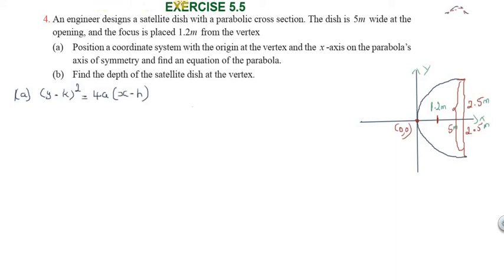Hi students, greetings from Success Education Academy. This is Exercise 5.5, question number 4. An engineer designs a satellite dish with a parabolic cross section that is 5 meters wide at the opening and the focus is placed 1.2 meters from the vertex. Position a coordinate system with the origin at the vertex and the x-axis on the parabola's axis of symmetry.